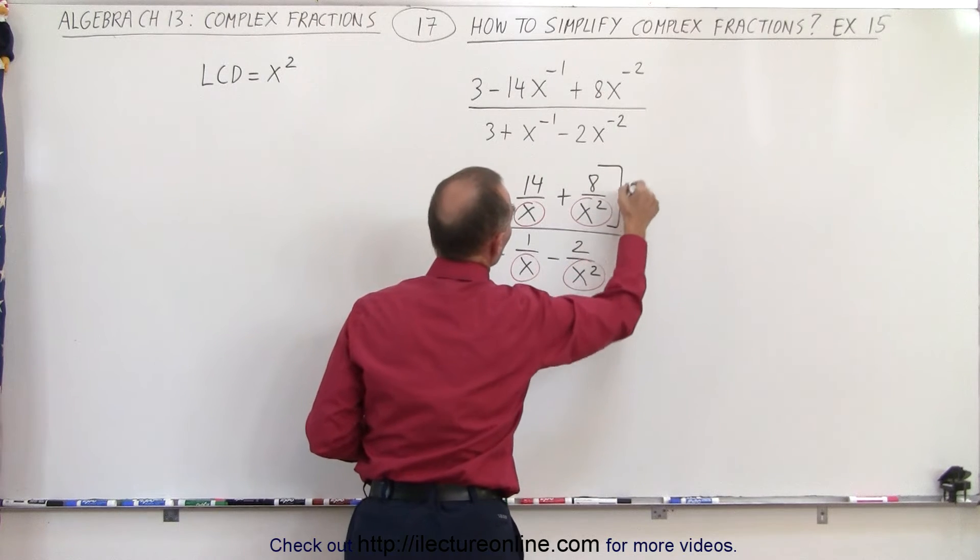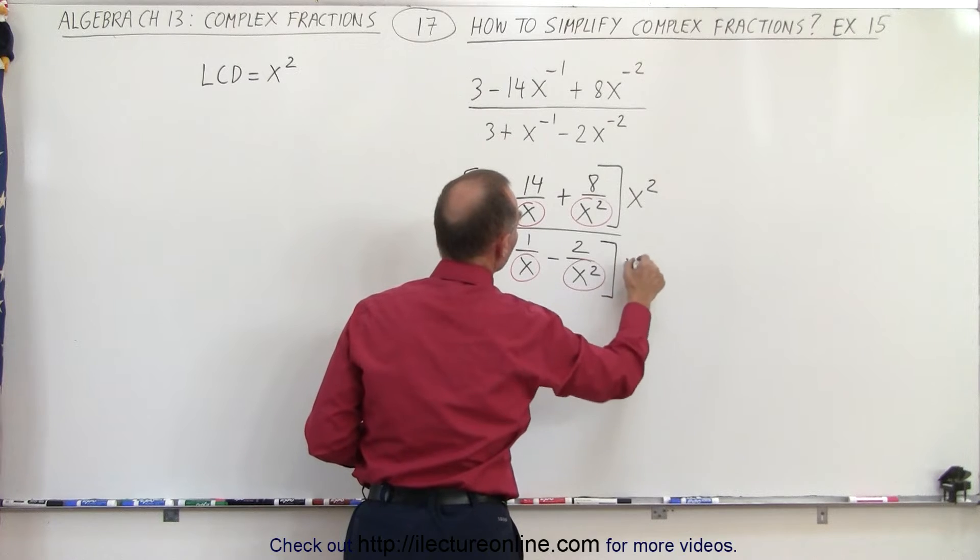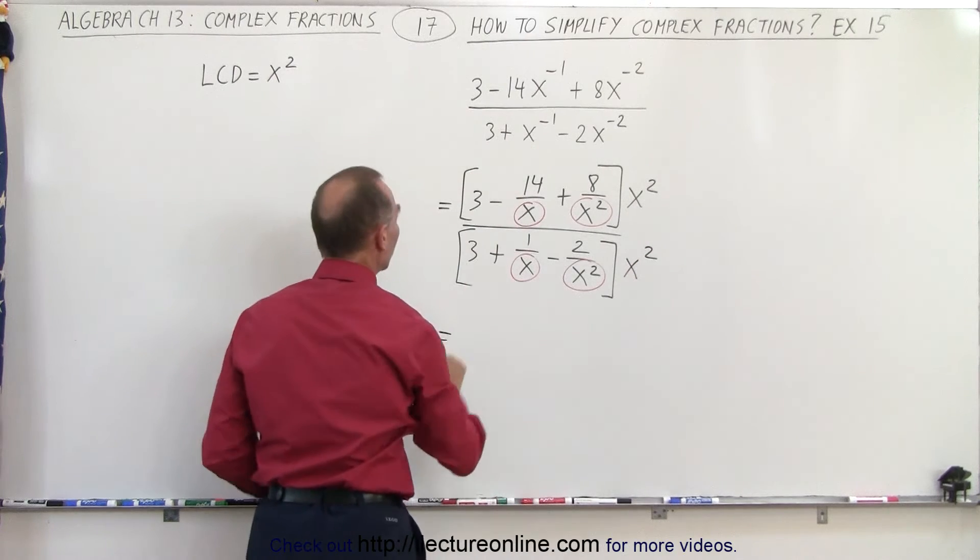So this, multiply times x squared, and the denominator we multiply times x squared. When we do so, we get the following.